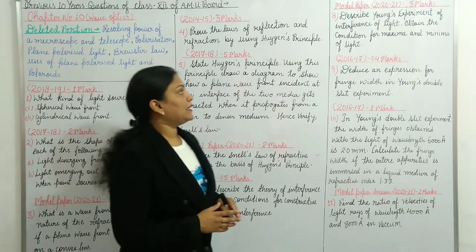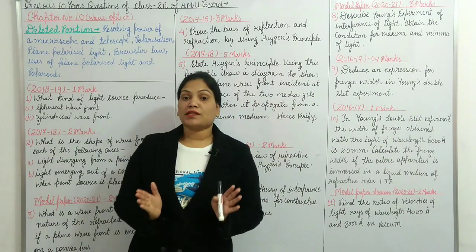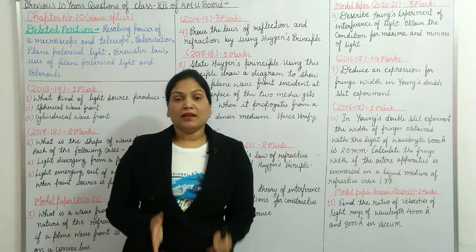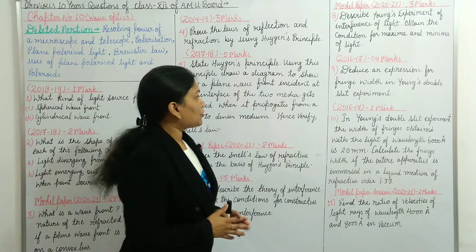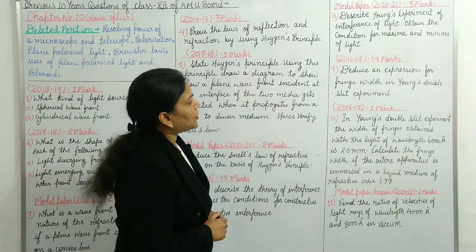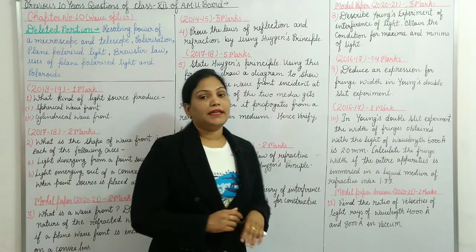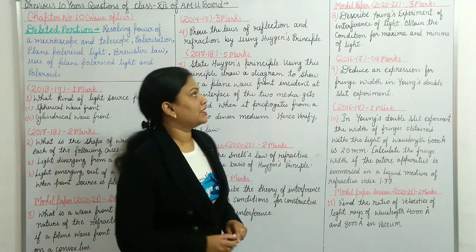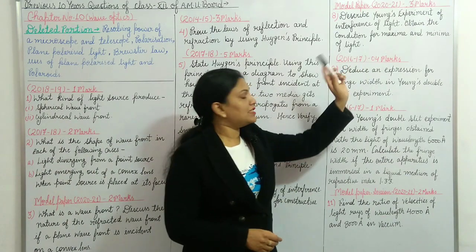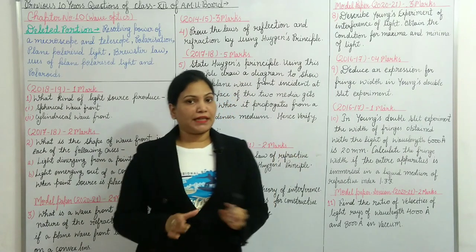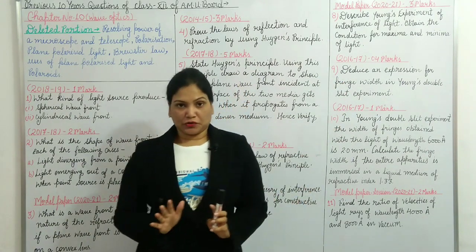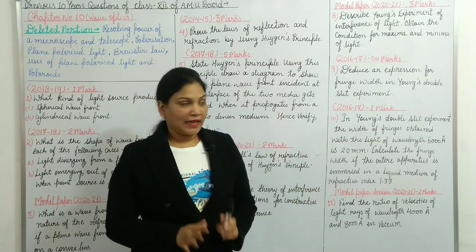This question was asked in the year 2016-17 for four marks. Question number nine: derive an expression for fringe width in Young's double slit experiment. When you do this, the fringe width derivation is a small one. If you do this, you will also be able to answer related questions.